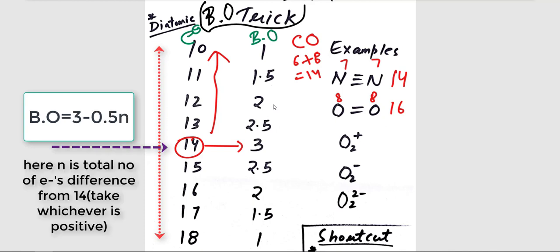For example, for 13, it's 2.5; for 12, it's 2; for 11, it's 1.5; for 10, it's 1. And similarly,